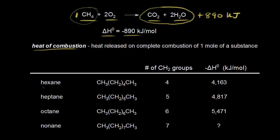Let's talk about hexane next. Let me draw out the structure for hexane. So we have six carbons. Notice we have two CH3 groups — one here and one here. And then we have four CH2 groups. So there are four CH2 groups in hexane.